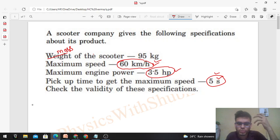If we know the power of the engine, that is given 3.5 hp, you can multiply this with 746 to convert it to joule per second. In 5 seconds, how much energy the engine of the scooter will supply? Multiply it with 5.